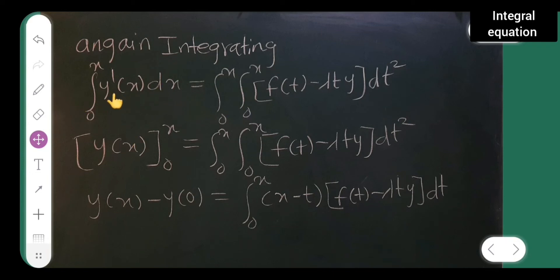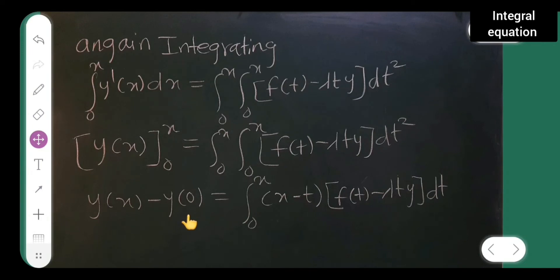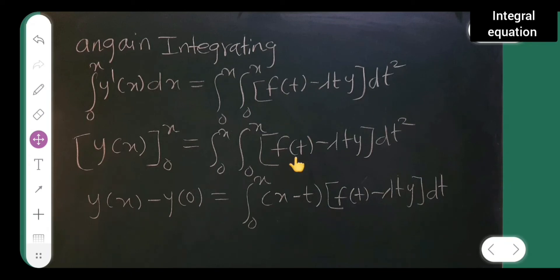The integral of the first derivative is y of x, and applying limits from 0 to x gives y of x minus y of 0. The right-hand side becomes integral from 0 to x of (x minus t) times (f of t minus lambda t y) dt, using the result from changing the order of integration as explained in the previous lecture.